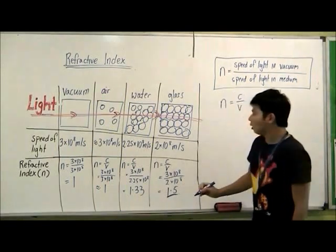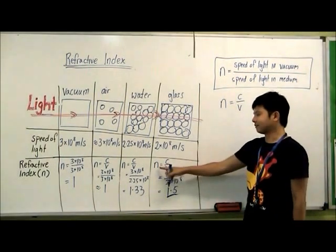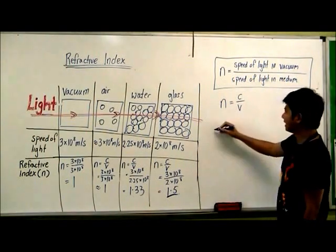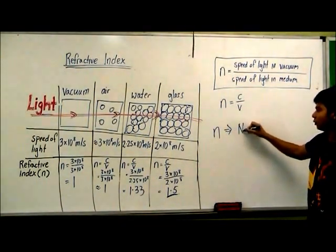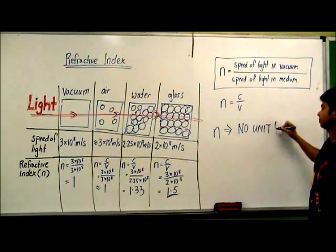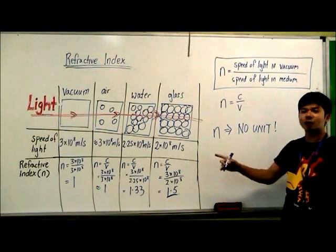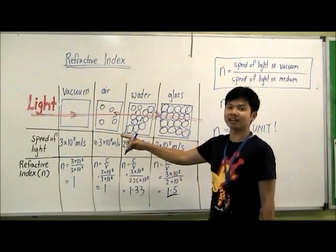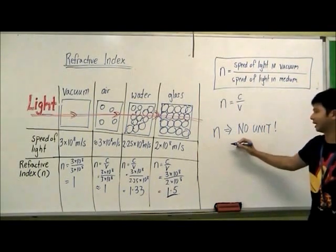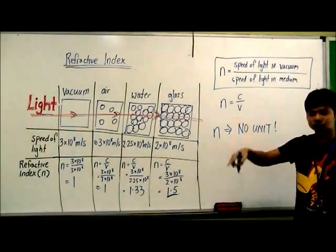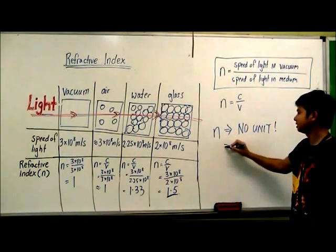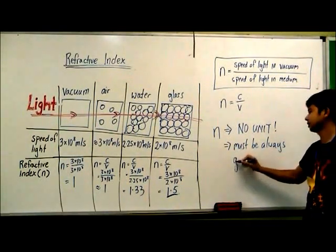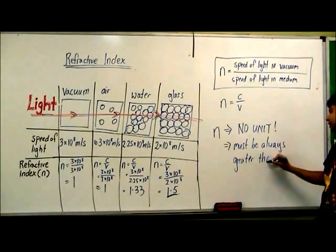One thing we have to take note: when we talk about refractive index, it's a speed divided by another speed, so the units cancel out. For refractive index, bear in mind that there is no unit. Basically, refractive index tells us how many times the speed of light in that medium is slower than the speed of light in vacuum. Since the speed of light in vacuum is the fastest, there is no way that the refractive index can go below 1. So refractive index must always be greater than or equal to 1.